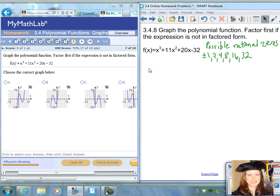Question number 8 is f(x) = x³ + 11x² + 20x - 32. This is not in factored form. So recall in the previous section where we were factoring polynomials, you want to list all the possible rational zeros, and I looked at all the possible factors of 32 divided by all the factors of the leading coefficient of 1.